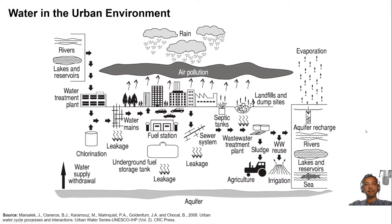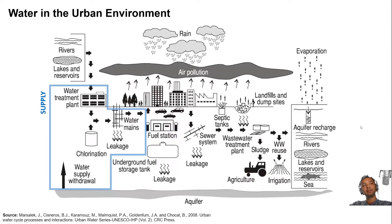Let's start with the basics. Water in the urban environment follows what we call an urban water cycle, and we can subdivide it into three basic components. First, water supply: providing safe and clean drinking water to people living in our cities — sourcing it, treating it, and distributing it across the city.